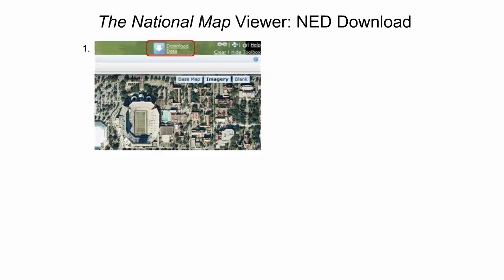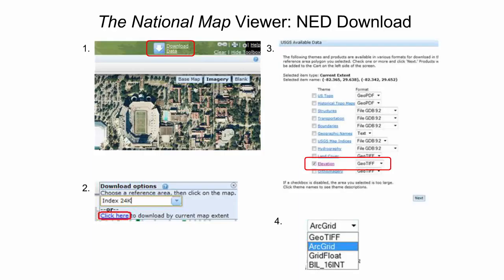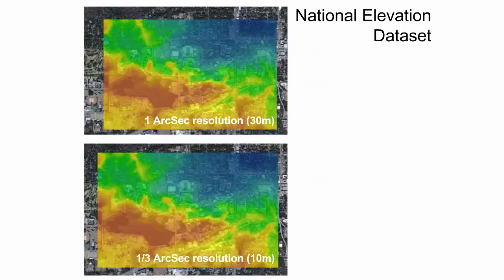To download NED data from the National Map Viewer, the user must first select the download data button at the top right, then select the hyperlink under download options to define the area of interest, and select the box beside elevation. The user must then decide which elevation data format to download. If using ArcGIS, a GeoTIFF, which is a georeferenced image file, or an ArcGrid format for raster calculations would be best. Two georeferenced NED raster products of the University of Florida Gainesville campus are shown: the one-third arcsecond raster grid at 10 meter resolution has three times the resolution of the 1 arcsecond grid at 30 meter resolution, resulting in a noticeably smoother raster grid.